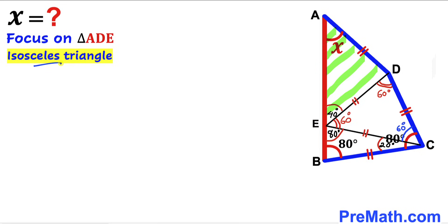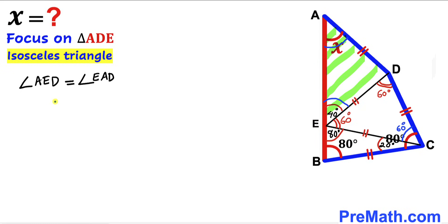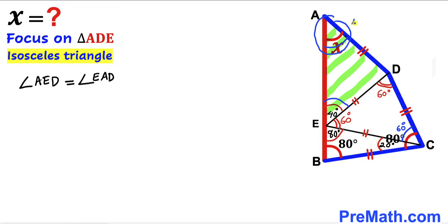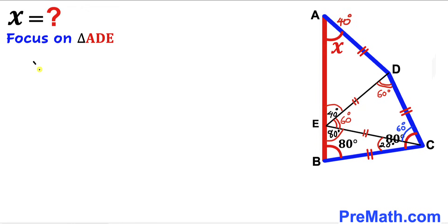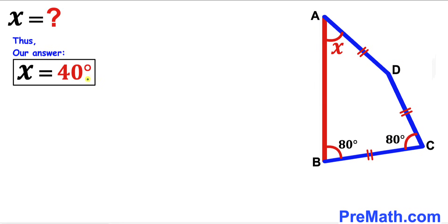Triangle ADE is an isosceles triangle since side ED equals side AD. Because these two sides are equal in length, angle AED is congruent to angle DAE. We know angle AED is 40 degrees, so therefore angle EAD — which is represented by x — is 40 degrees as well. Thus we conclude that angle x equals 40 degrees. That's our final answer.